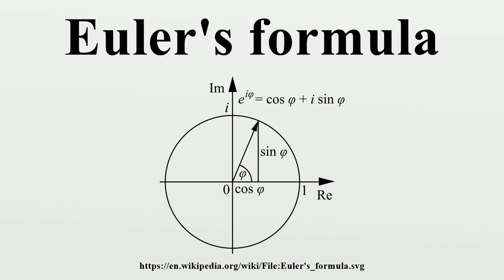In electronic engineering and other fields, signals that vary periodically over time are often described as a combination of sine and cosine functions, and these are more conveniently expressed as the real part of exponential functions with imaginary exponents, using Euler's formula.